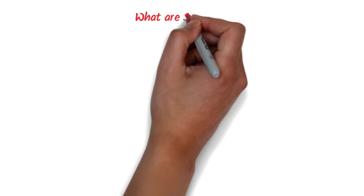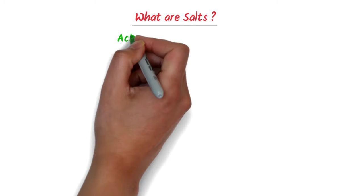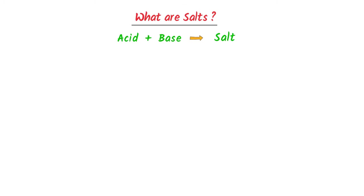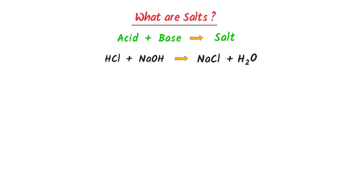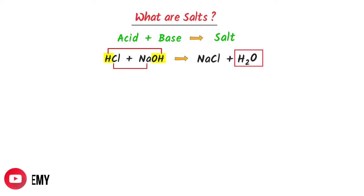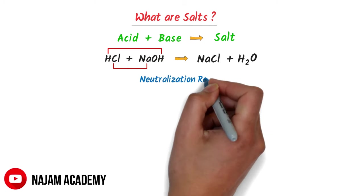Now coming to the third topic: what are salts? When acid plus base react together, they form salt. For example, hydrogen chloride plus sodium hydroxide react together to form sodium chloride plus water. The metal part of the base like sodium and the negative part of the acid like chlorine react together to form a salt like sodium chloride. The hydroxide ion of the base and the hydrogen ion of the acid react together to form water.